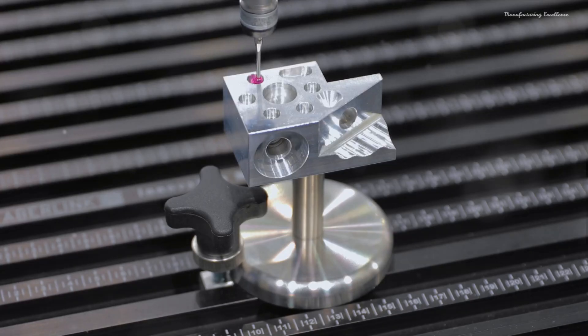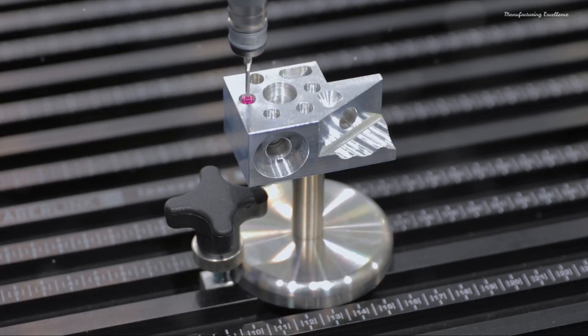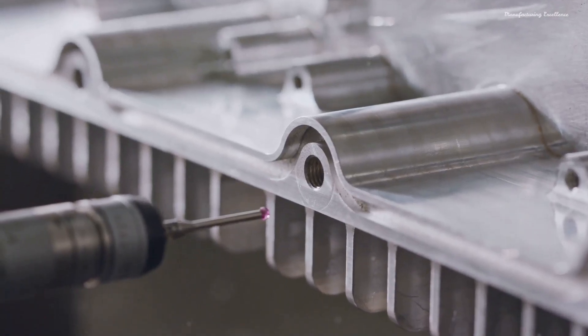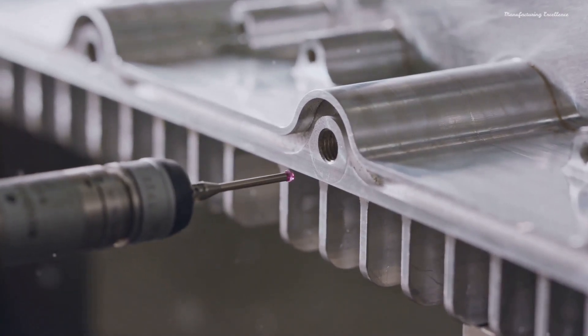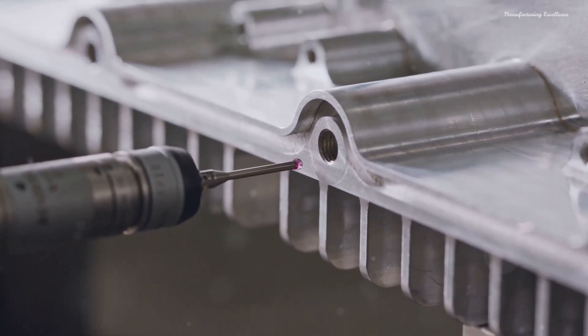These machines use touch probes or lasers, just like an artist uses their hands, to measure the geometry of physical objects with jaw-dropping precision. The beauty of a CMM lies in its ability to take something as complex as a three-dimensional object and break it down into precise, measurable coordinates.